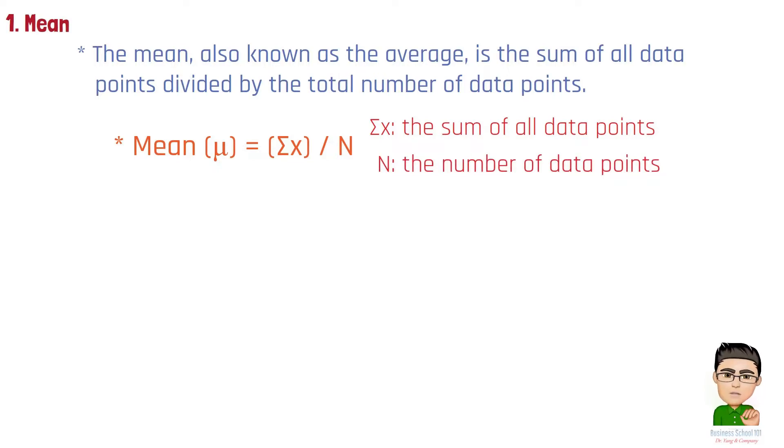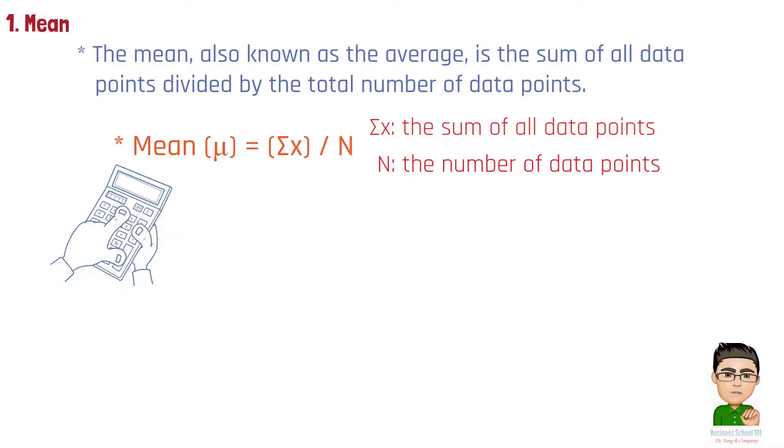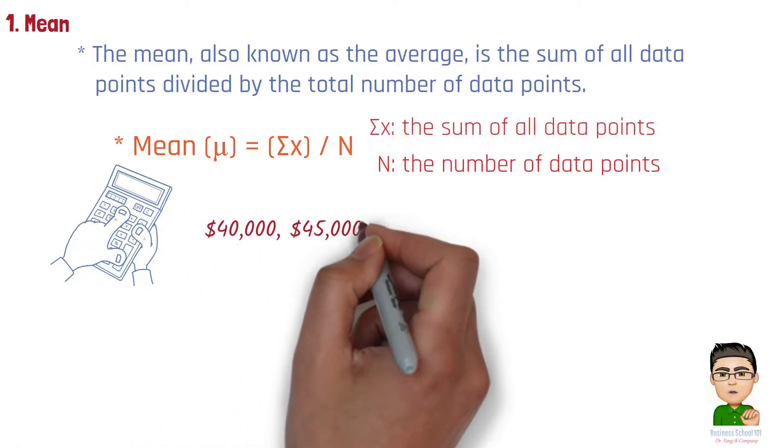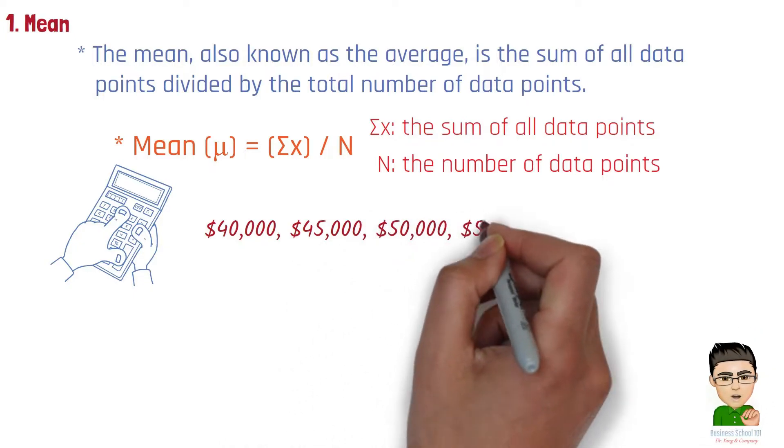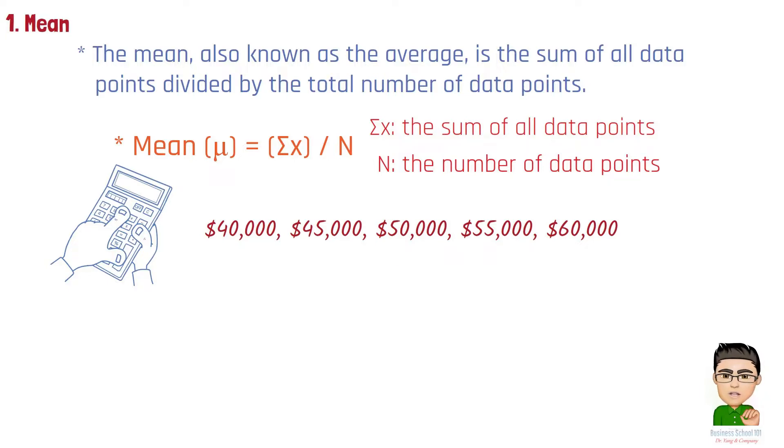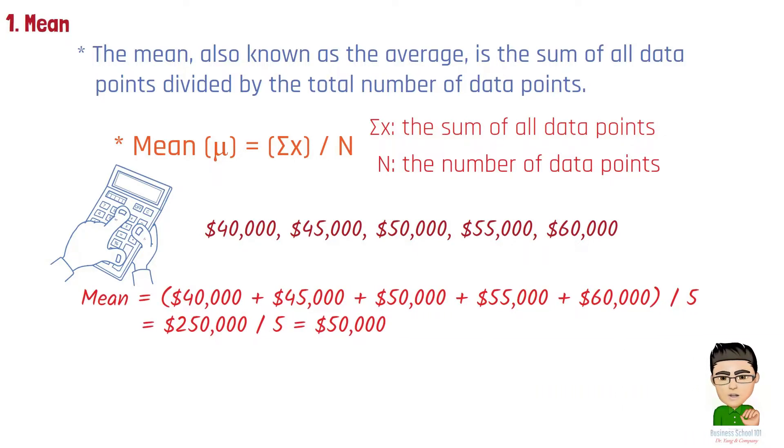For example, imagine a company wants to calculate the average salary of its employees. Here are the salaries of five employees: $40,000, $45,000, $50,000, $55,000, and $60,000. In this case, mean equals the sum of all five salaries divided by five, which equals $50,000.